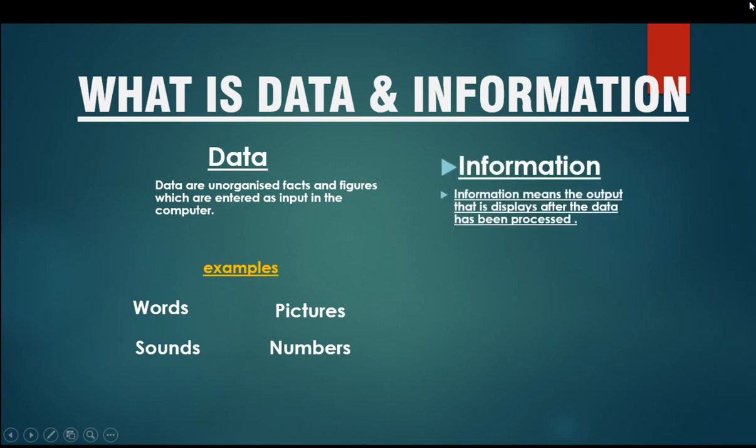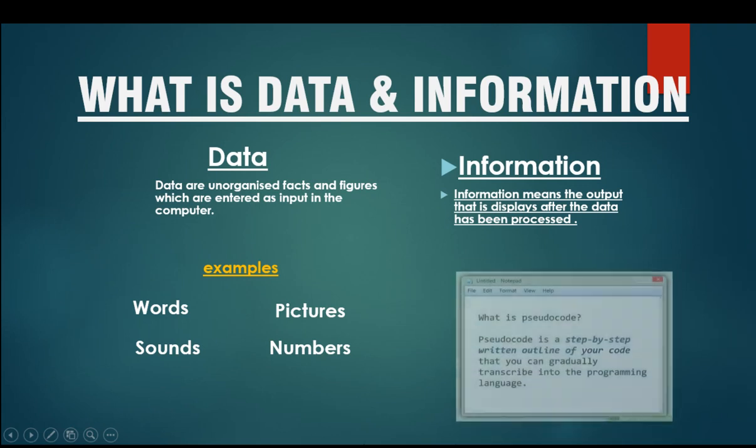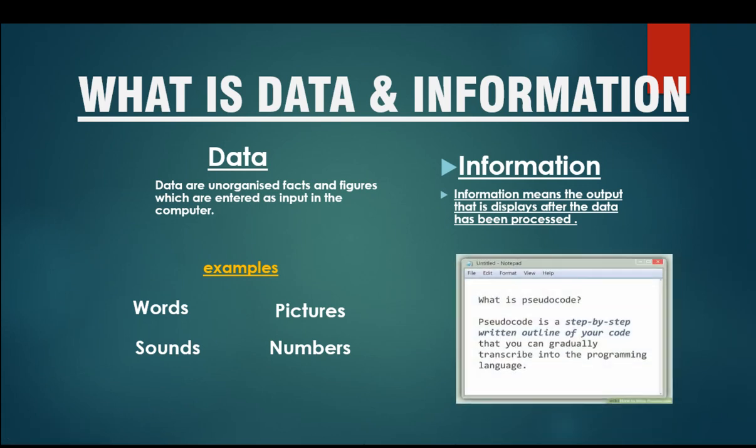Now, what is information? Information means the output that is displayed after the data has been processed. This is the written information on the monitor.